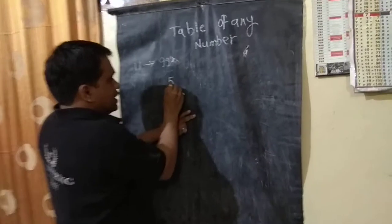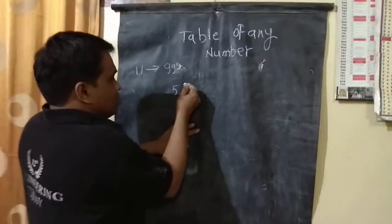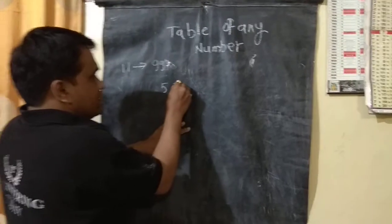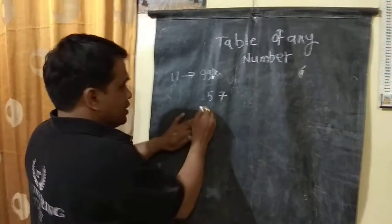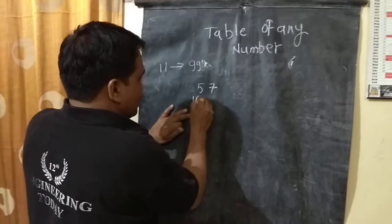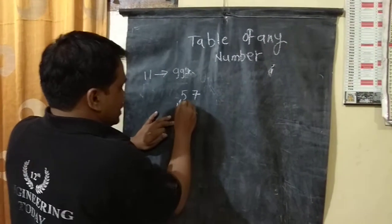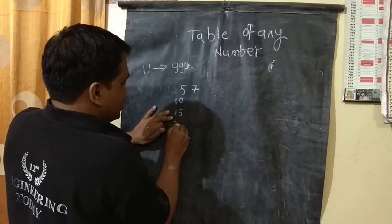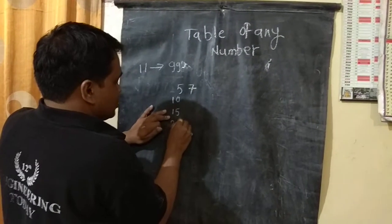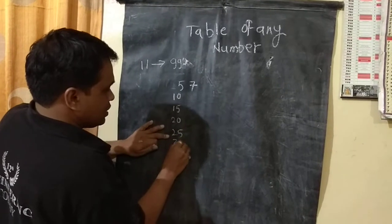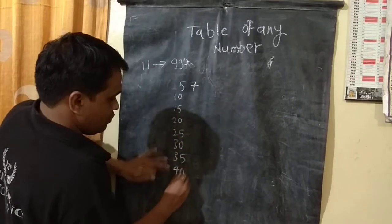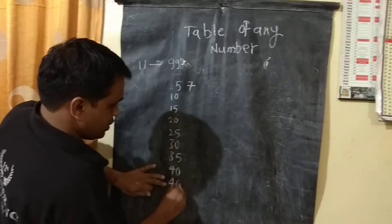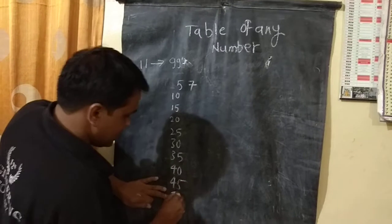Take an example of 56, or you can say 57. For this, write the table of 5: 5 twos are 10, 5 threes are 15, 5 fours are 20, 5 fives are 25, 30, 35, 40, 45, and 50.